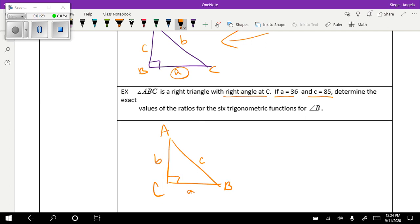Now I'm going to go ahead and put in what it tells us. So angle A is 36, little a is 36, so I'll put 36 in there, and then C is 85. It says determine the exact values of the ratio of the six trig functions for angle B.